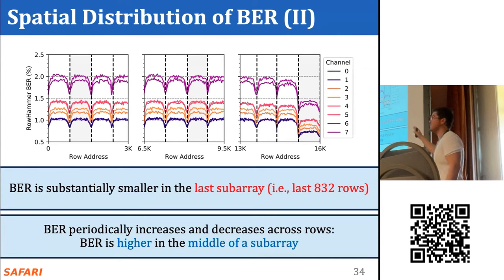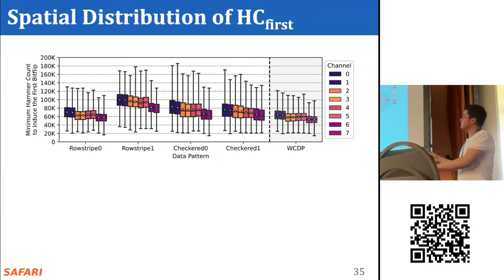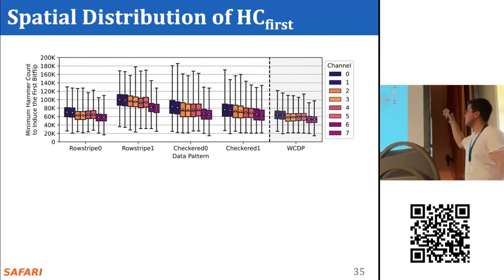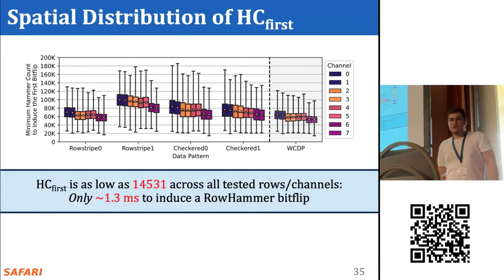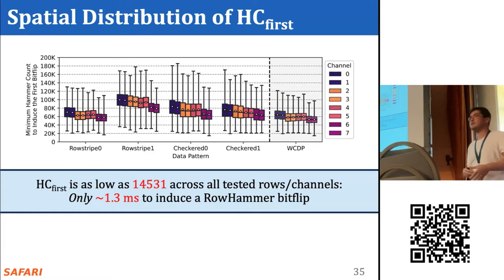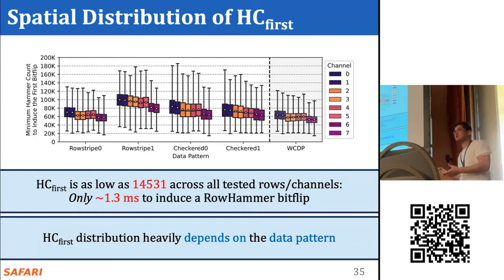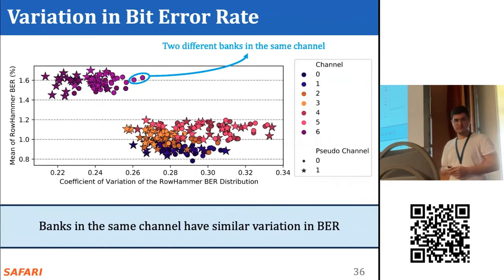A larger plot confirms this second observation holds across all tested variables. The plot showing HC_first distribution in a channel on the y-axis, with different boxes for different channels and data patterns on the x-axis, shows HC_first as low as around 14,000, meaning we can induce the first bit flip in around one millisecond. HC_first distribution depends heavily on the data pattern used, meaning we must exhaustively test all data patterns to assess HBM2 rowhammer vulnerability.